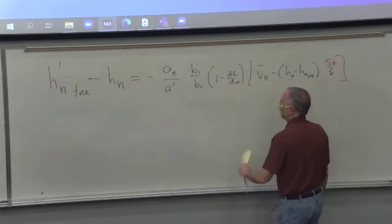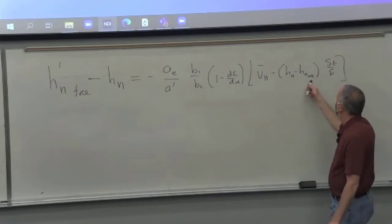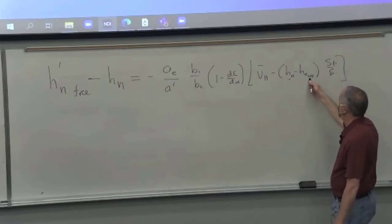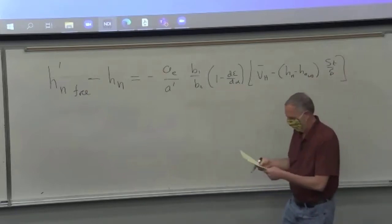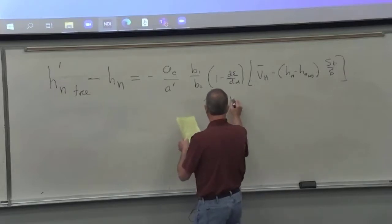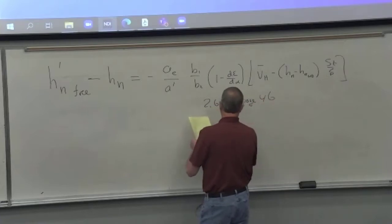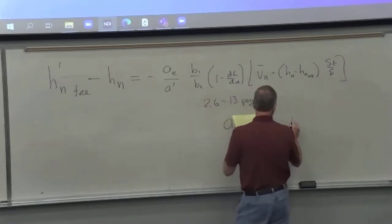And so this formula allows you to calculate the neutral point stick-free compared to the neutral point stick-fixed. And you see the normal stuff for the neutral point in this formula. Here's the VH bar. Here's the distance from the CG to the wing body neutral point. Here's the area ratios and stuff like that.